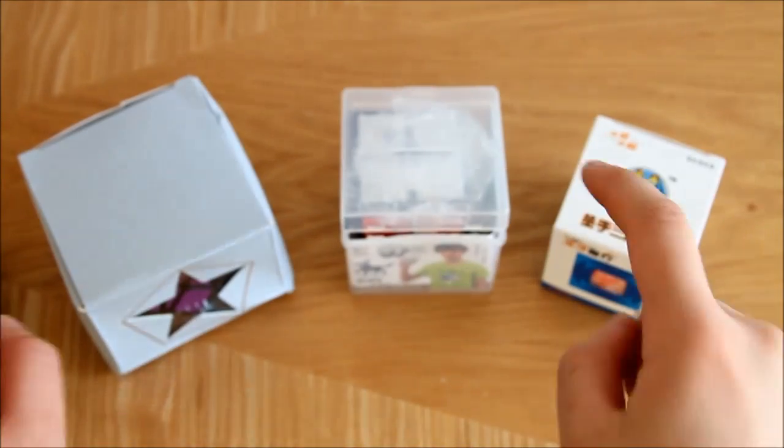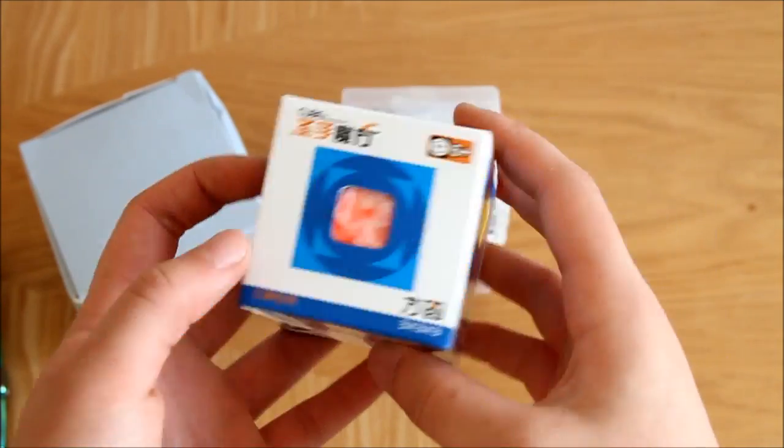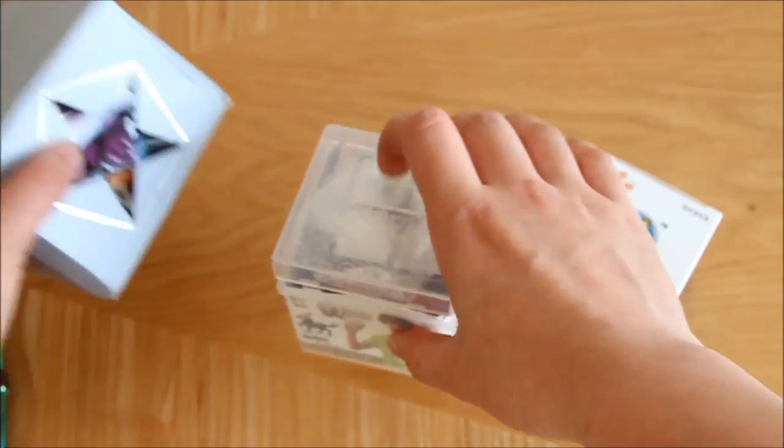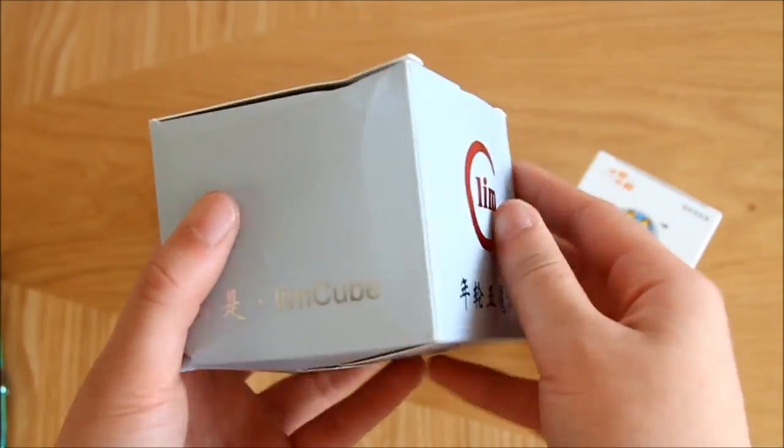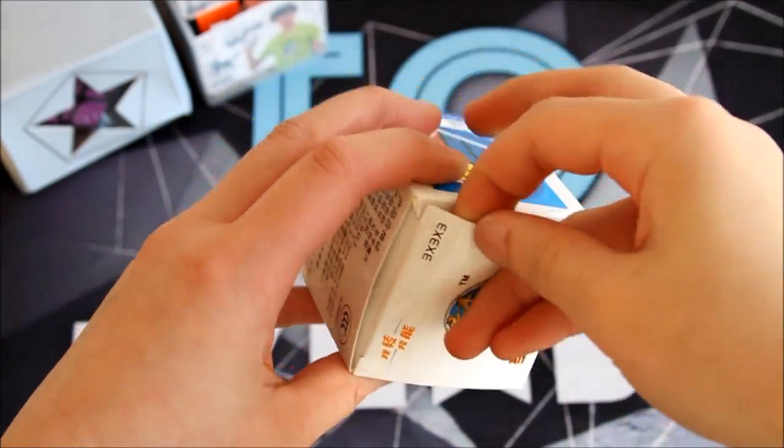Hey guys, another unboxing today. Here are the puzzles we're working with: the Sheng Xiao Fang Yun 3x3, the Yuxin White 2x2, and lastly the Fangshi Lim Cube Megaminx. I'm pretty excited for all these puzzles, so let's just get into them. Let's get started with